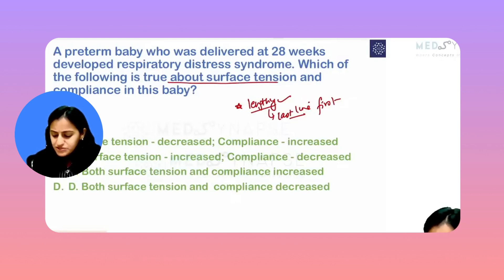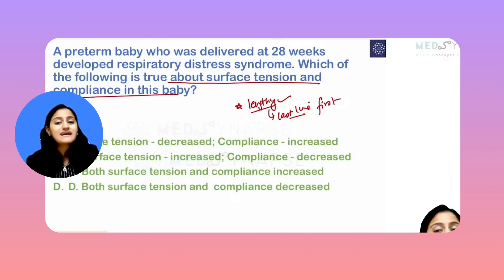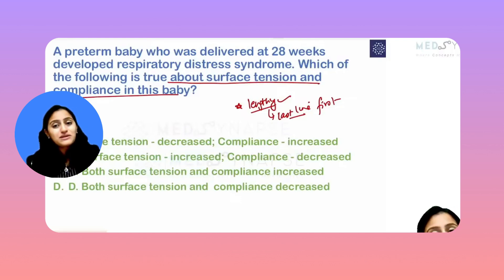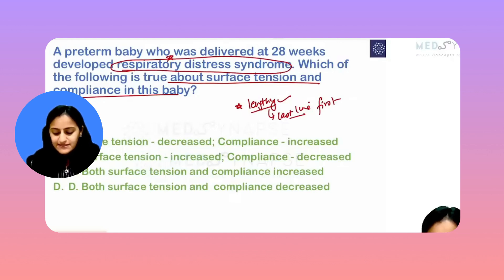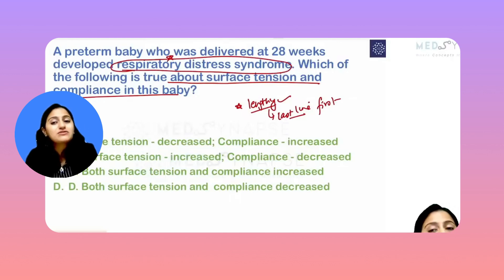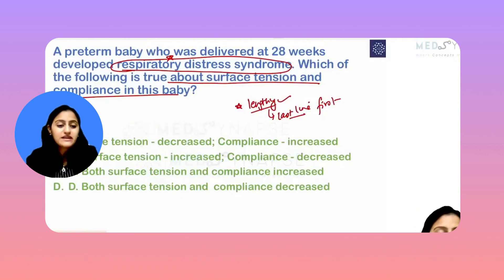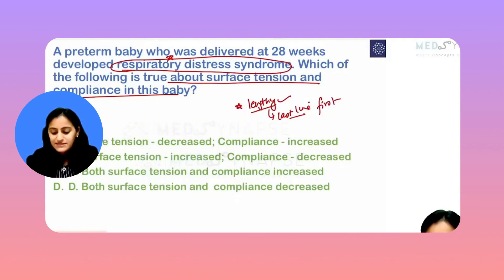The question asks: which of the following is true about surface tension and compliance in this baby? Read the second last line if the last line doesn't give you the crux. It's asking about respiratory distress syndrome — that is how you save time.